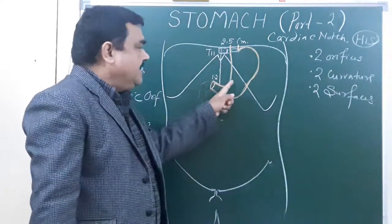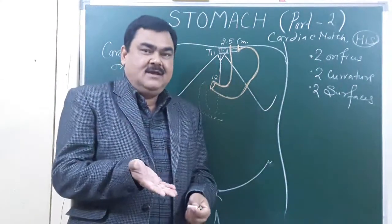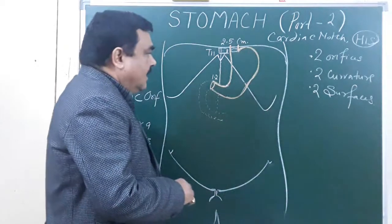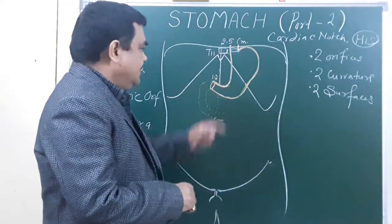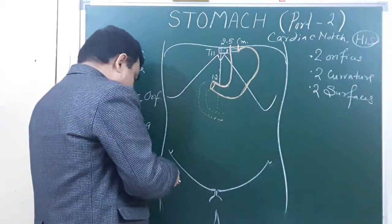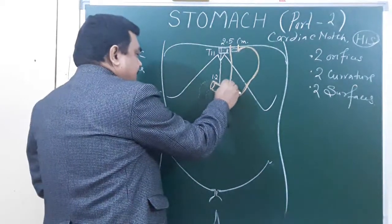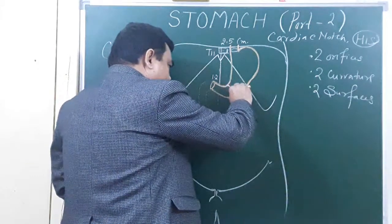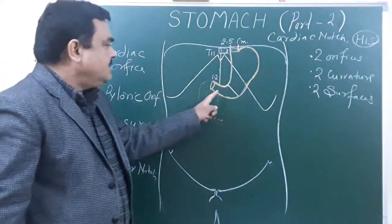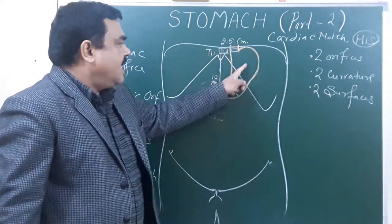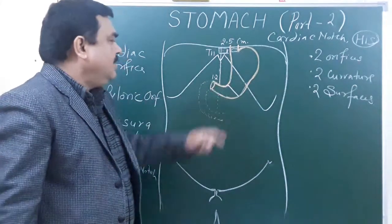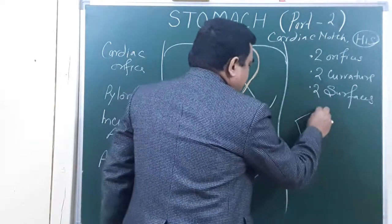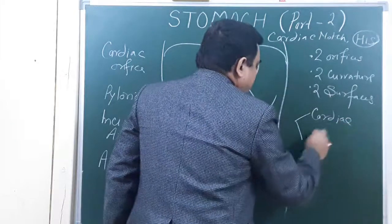Now we will discuss the divisions of the stomach. A line drawn from the angular notch passes downward and towards the left, dividing the stomach into two parts: the cardiac part and the pyloric part.